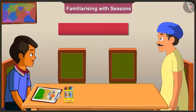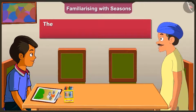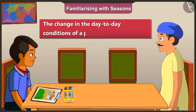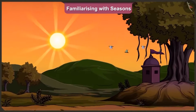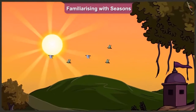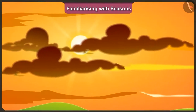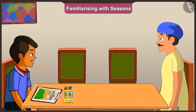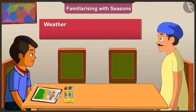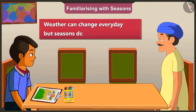But uncle, what is weather? The change in the day-to-day conditions of a place is called weather. For example, there is bright sunshine in the morning and it is cloudy in the evening. But uncle, how are weather and seasons different from each other? The weather can change every day, but not the season.